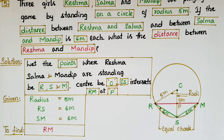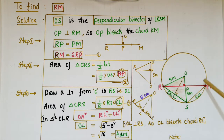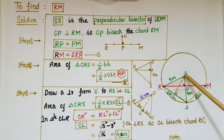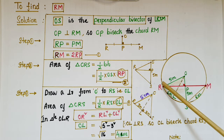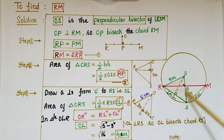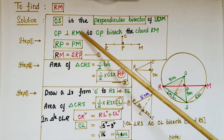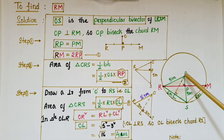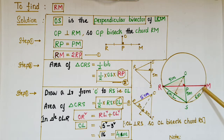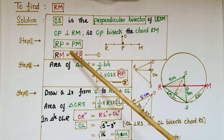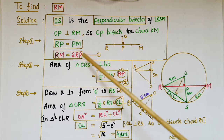To find RM: OS is a perpendicular bisector of angle RSM because if two equal chords intersect at a point, a line drawn from the center of the circle to that point is a bisector of this angle. So OS bisects angle RSM — these two angles are equal — and OS is also a perpendicular bisector. Therefore OP is perpendicular to RM, which means it bisects the chord RM. So RP equals PM, and RM equals 2RP. This is equation 1.